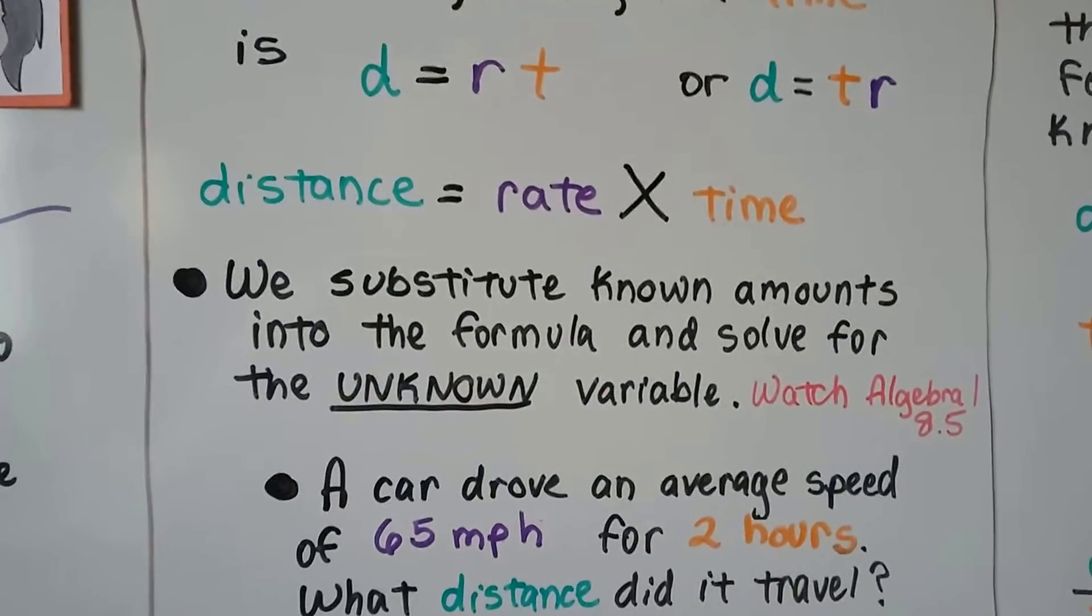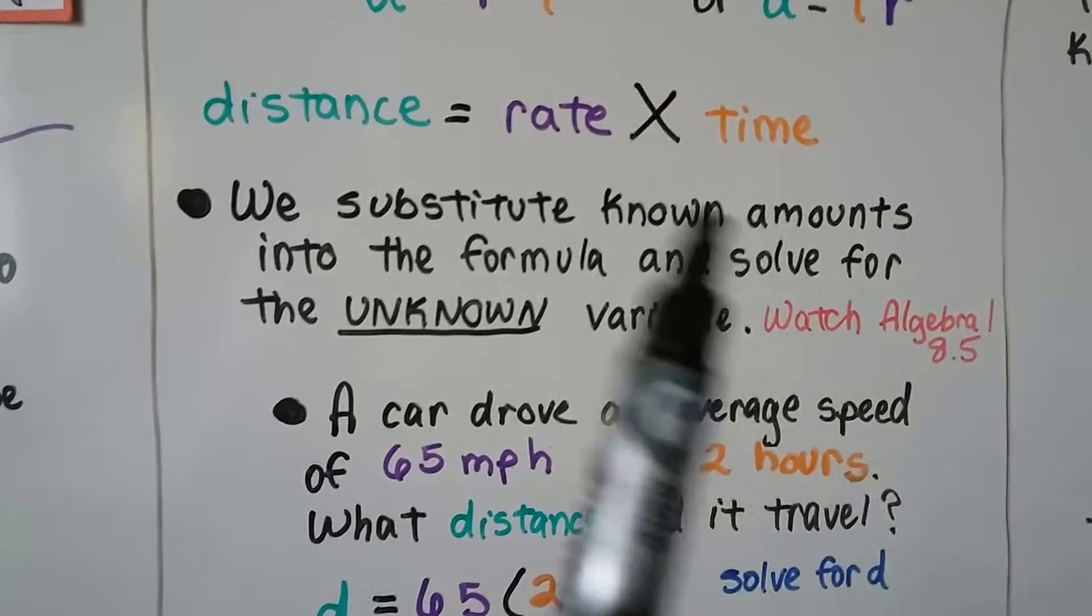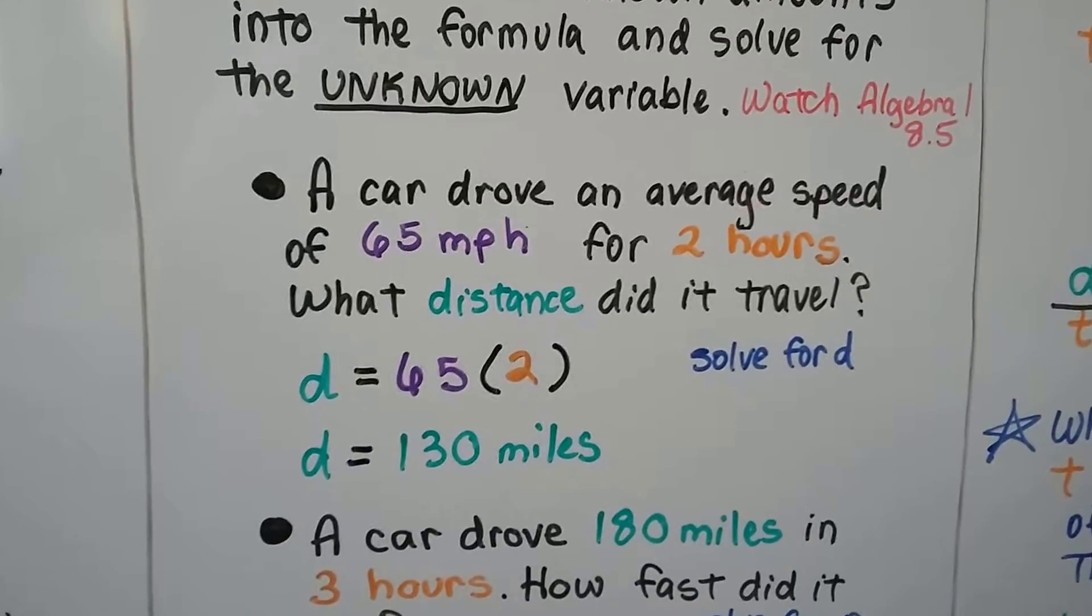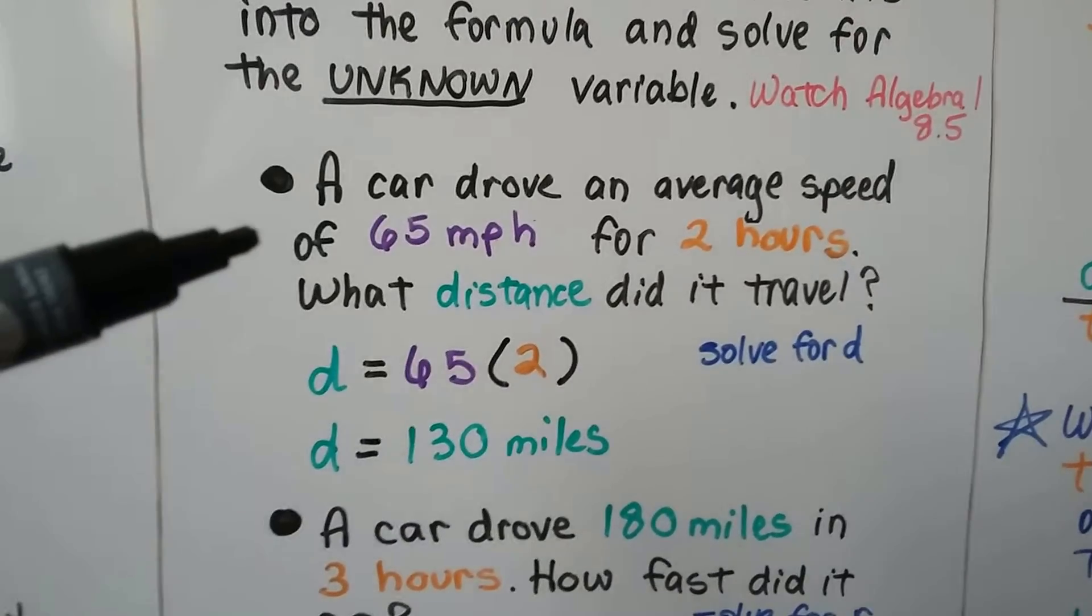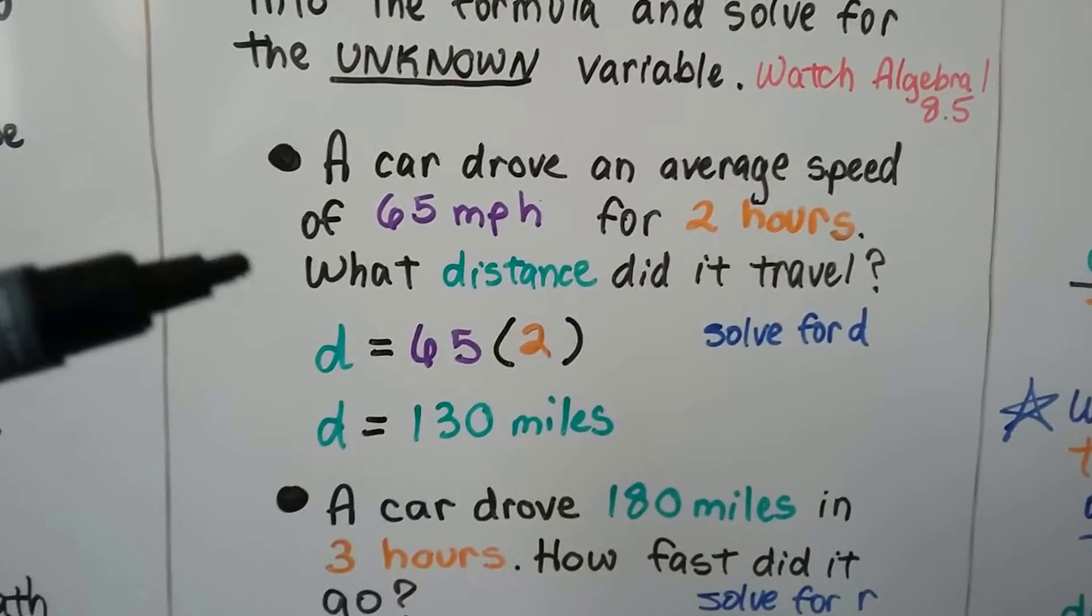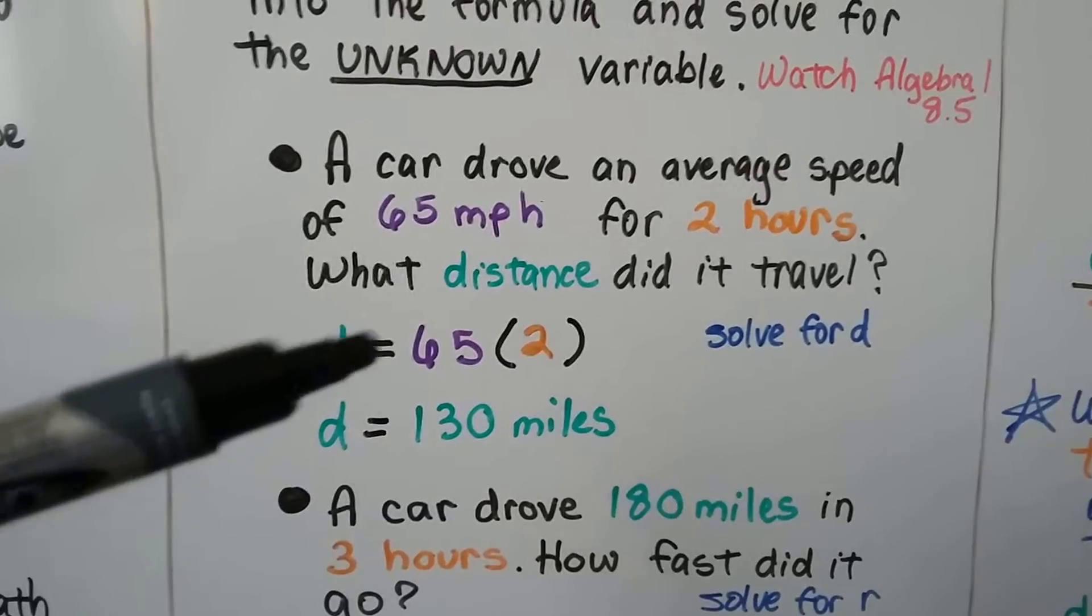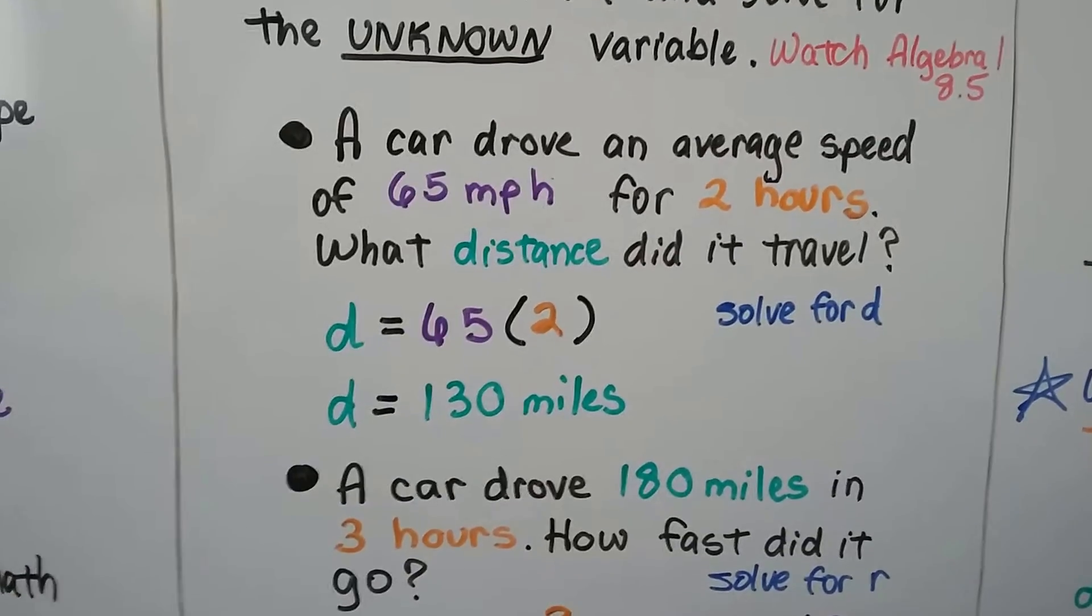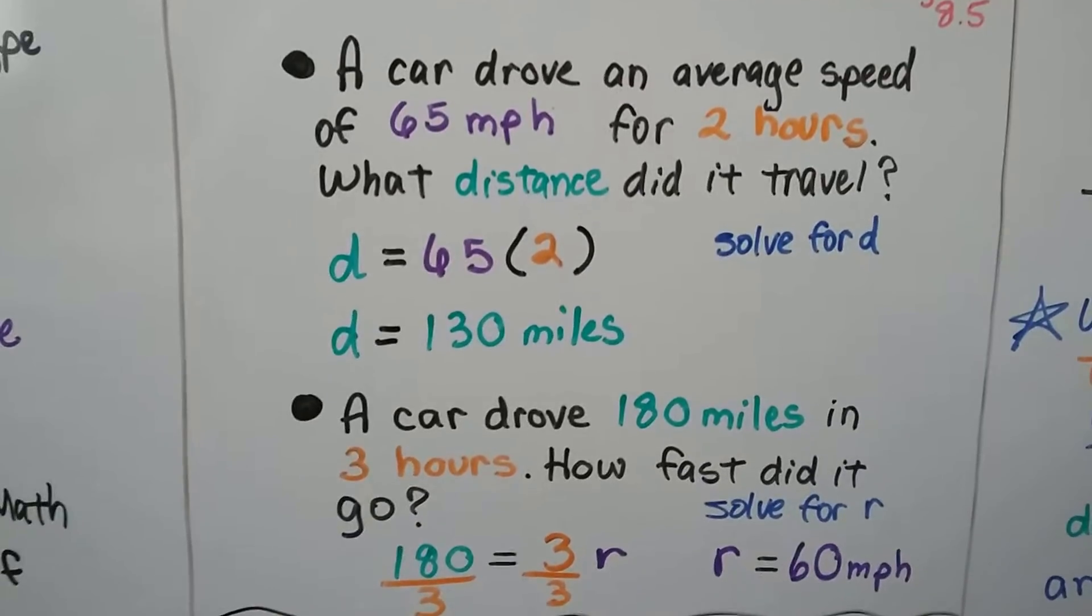We substitute known amounts into the formula and solve for the unknown variable. Now you can watch Algebra 1 video 8.5 that talks about this uniform rate motion problem. A car drove an average speed of 65 miles per hour for two hours. What distance did it travel? Now I made this extremely simple so that you can see in your head what's going on. On the test, it might be a little more difficult, but I tried to keep this as simple as possible so you could follow the method that we're using. So the distance that they traveled is equal to the 65 miles per hour speed times the two hours. What we do is we multiply the 65 times two and we know that the distance is 130 miles. We solve for D.